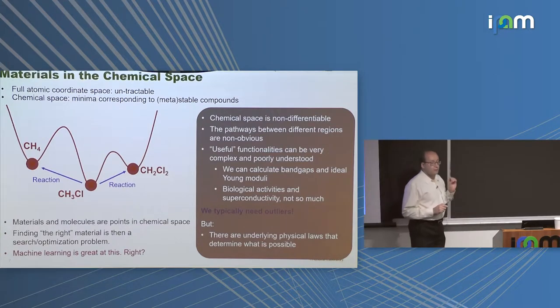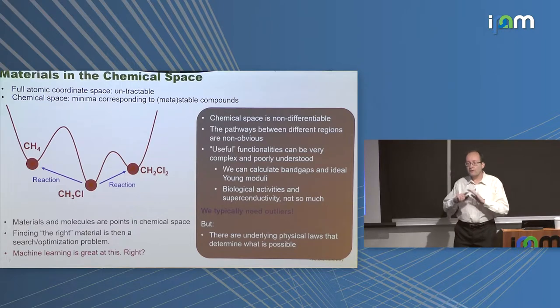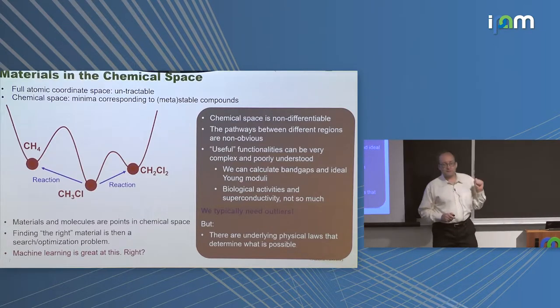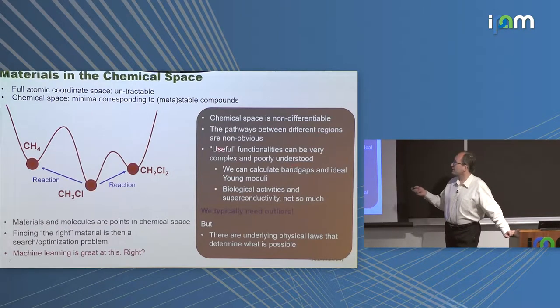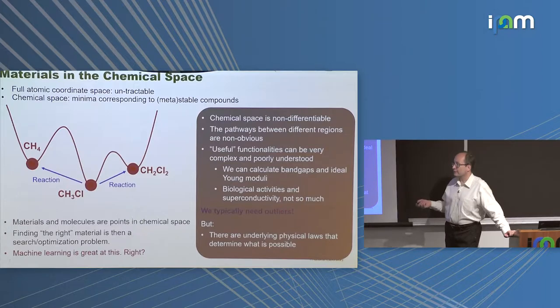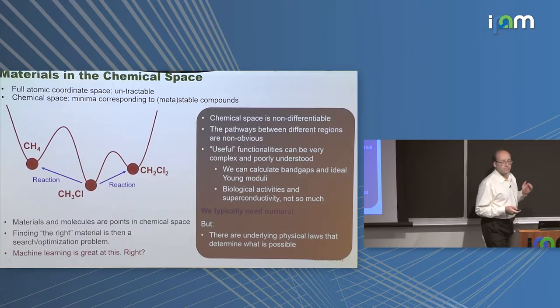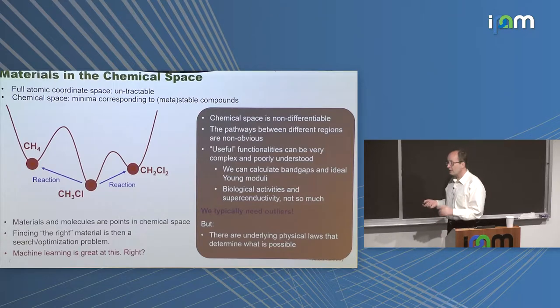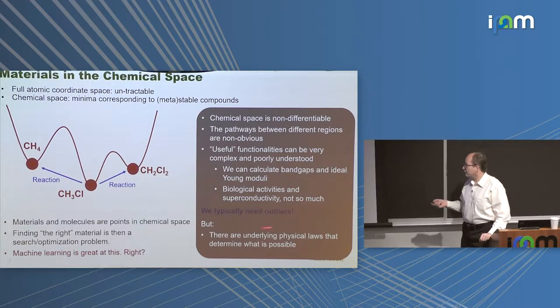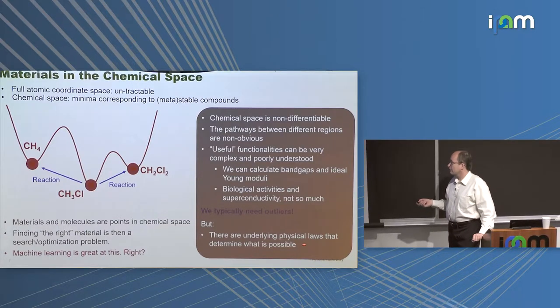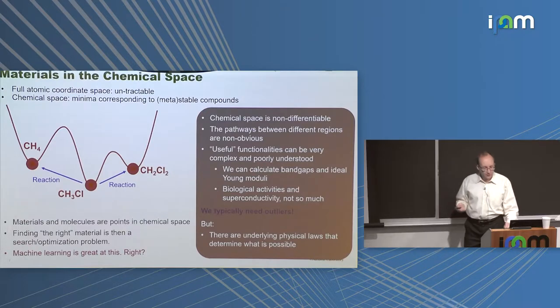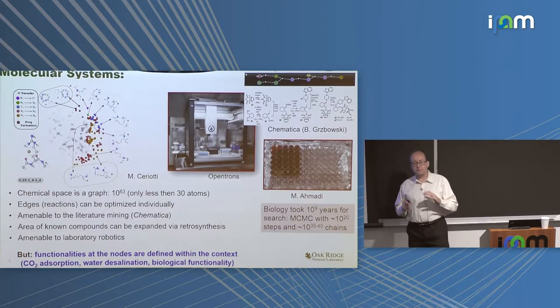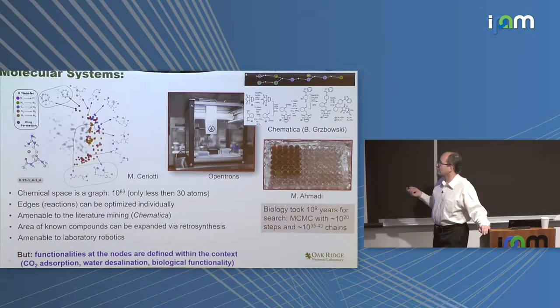When we deal with materials discovery, we do not need to find behavior in general. I really don't need to know what 95% of materials are doing. I need to find an outlier, a material which is best for my specific problem. If you take these three factors - non-differentiability, not known cost function, and the need for outliers, you can figure out why using machine learning for materials discovery is complicated. But there is always a hope.